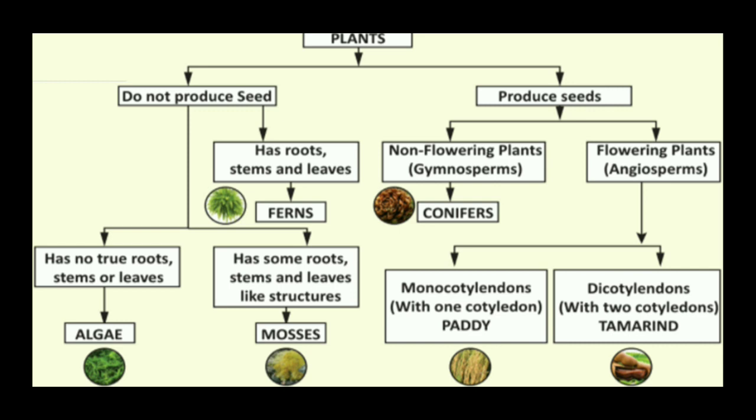Algae are plants which have no true root, stem, and leaves. Mosses have some root, stem, and leaf-like structures, but the plant body is not fully differentiated into root, stem, and leaves. Ferns have a plant body that is well differentiated into root, stem, and leaves — they have true root, stem, and leaves.